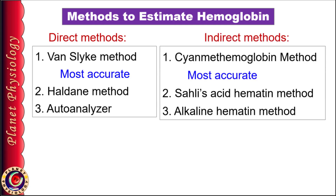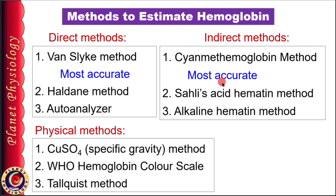Indirect methods convert hemoglobin to some other colored compounds. Based on the intensity of the color of these compounds, hemoglobin content is estimated. Among indirect methods, the cyanmethemoglobin method is the most accurate as it measures all forms of hemoglobin. Physical methods like copper sulfate method or hemoglobin color scale are qualitative methods used mainly for screening purposes.